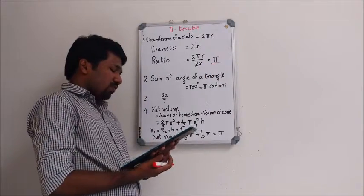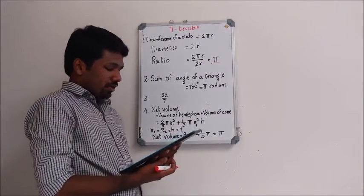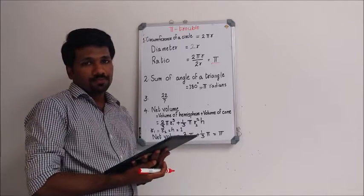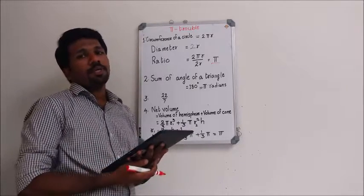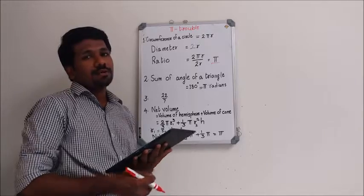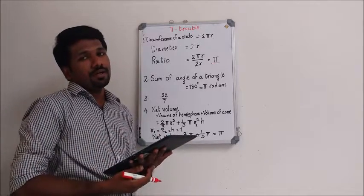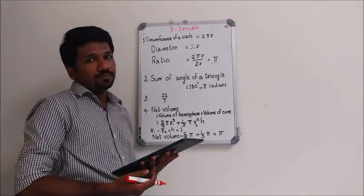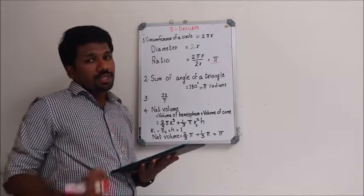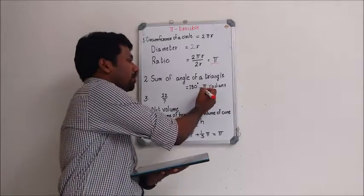Considering option 2, the sum of the three angles of a plane triangle expressed in radians. By the angle sum property of triangles, we know that the sum of internal angles of a triangle equals 180 degrees. And 180 degrees when expressed in radians is nothing but π radians.